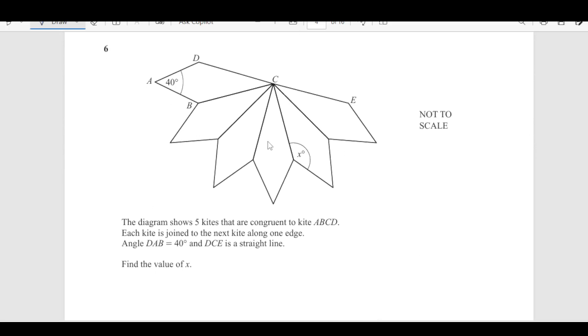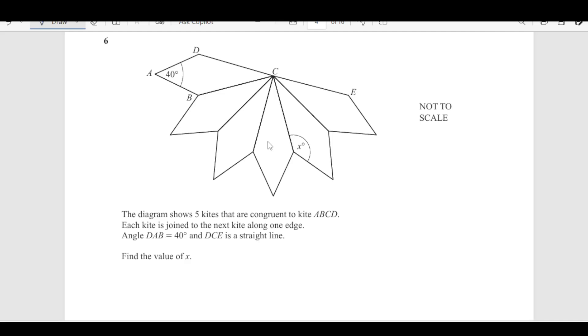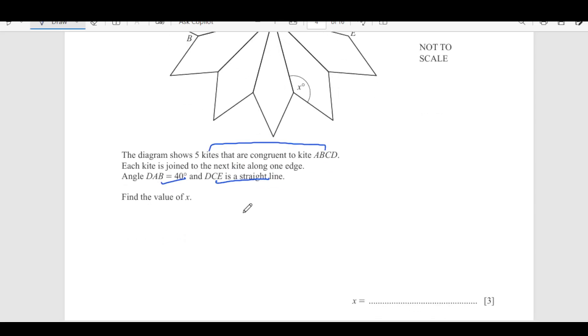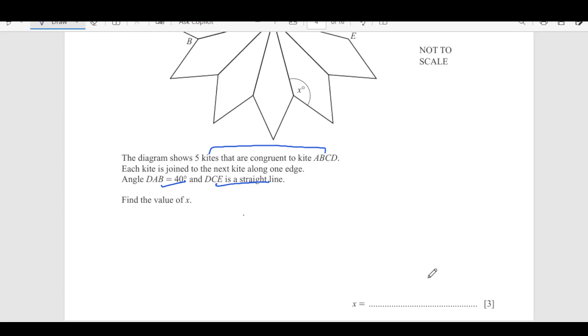Now, we have another question. You can see a nice diagram here. The diagram shows 5 kites that are congruent to kite ABCD. So, this ABCD and then we have 1, 2, 3, 4, 5 more kites. The kite is joined to the next kite along one side as you can see. The angle DAB is 40 and DC is a straight line. Find the value of x. We are looking for this value. This looks complicated but it is not that complicated if you know the concepts.